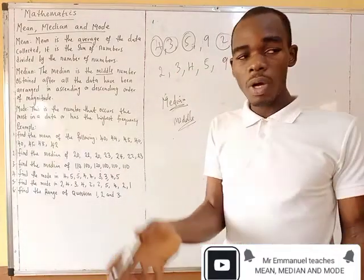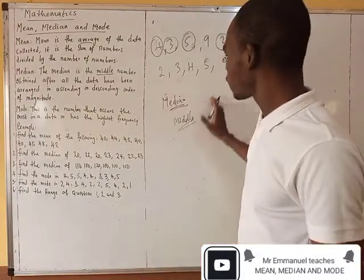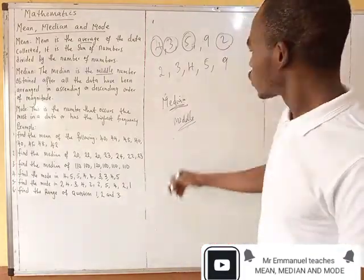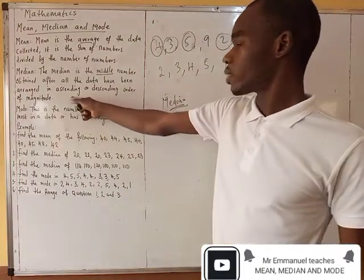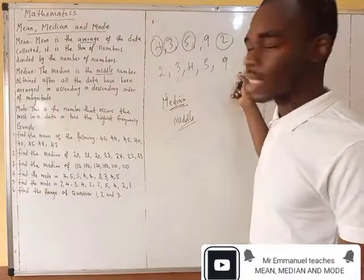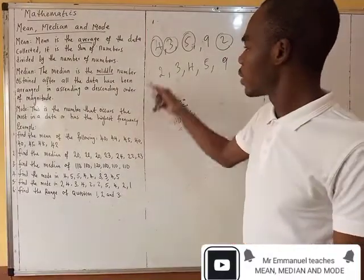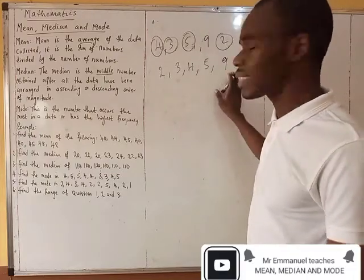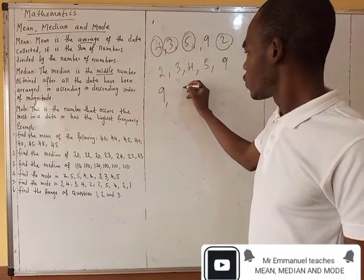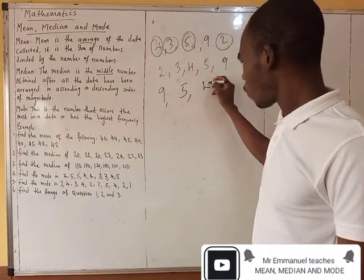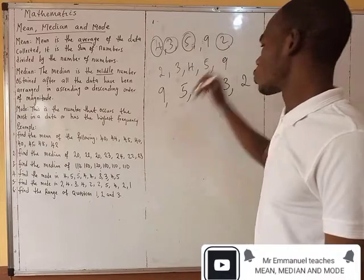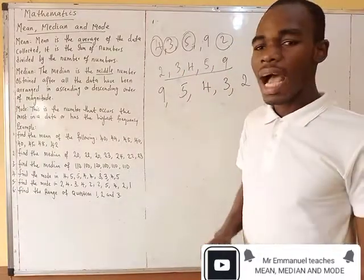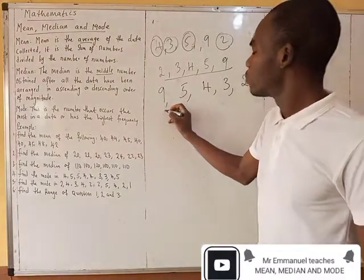But when they say descending order, what they actually mean is to arrange it from the biggest to the smallest. So ascending is smallest to biggest, and descending is biggest to smallest. If I'm to arrange this in descending order, that would be nine, five, four, three, and two.